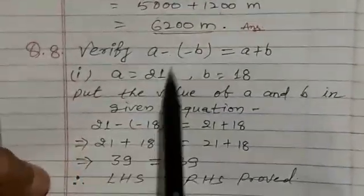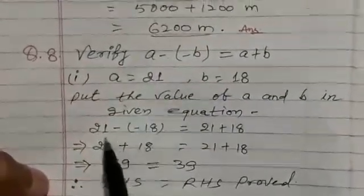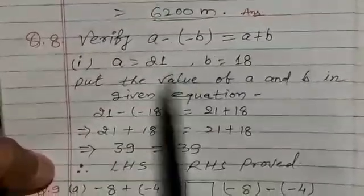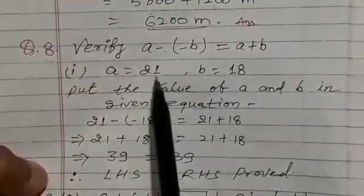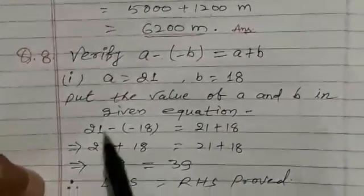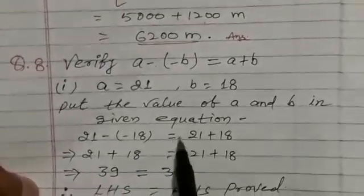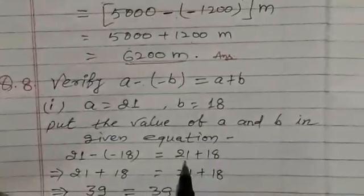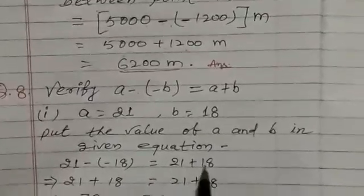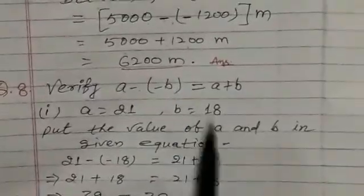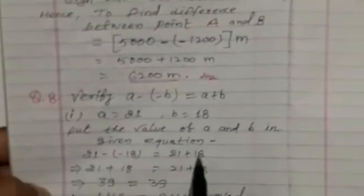21 minus, minus B, B is 18, 21 minus, in small bracket, minus 18, and equal to, at right hand side, A plus B, A plus B, A is 21, and B is 18.